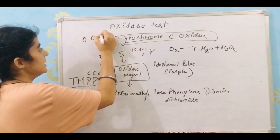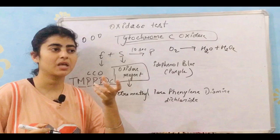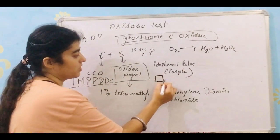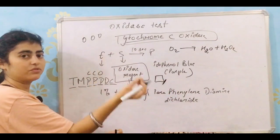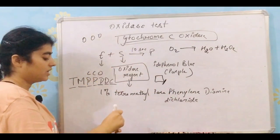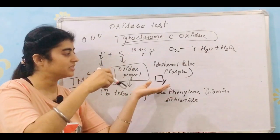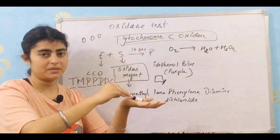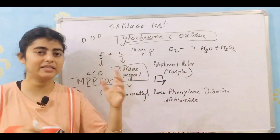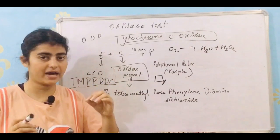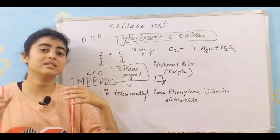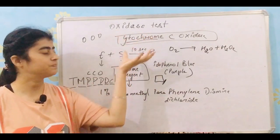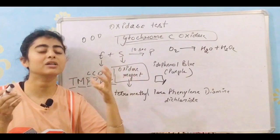You can either do it with the help of a coverslip. With the help of edges of the coverslip, you can simply pick up the colony from the petri plate and tilt the coverslip side that has colonies to the filter paper, and there would be immediate color change that you can easily see with your eyes. And if there is occurrence of color change, then you can suggest that the colony is oxidase positive.